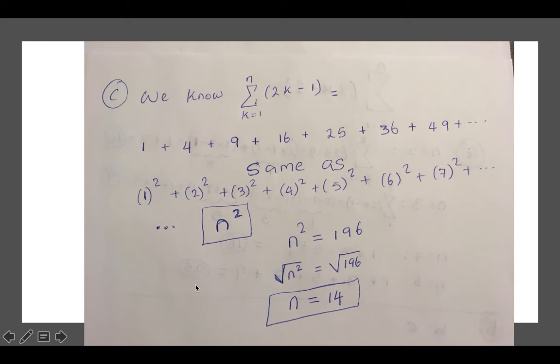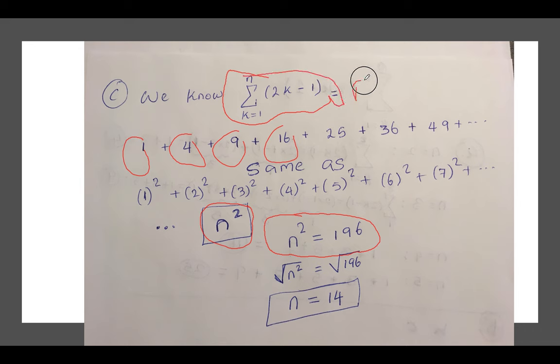So 1, 4, 9, 16, 25, all the way: these are perfect squares. What do I mean by perfect squares? 1 square is 1, 2 square is 4, 3 square is 9, 4 square 16, 5 square 25, 6 square 36, 7 square 49, 8 square 64, 9 square 81, it keeps going. This is the same thing as me writing n square, where n starts from 1, then it goes to 2, then it goes to 3. I can put n square equals 1 square plus 2 square plus 3 square, then I can set n square equals to 196.